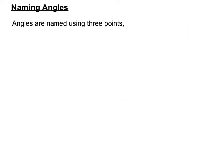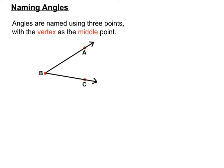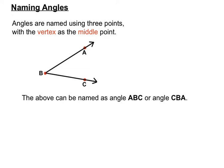When naming angles, we use three points and the vertex letter must be in the middle of the name. So with a point A, point B and point C, where B is at the vertex, the angle could be named angle ABC or angle CBA. It doesn't matter what order we put A and C in, but it's essential that the vertex letter B is in the middle of our name. That way we know which angle we're referring to when there's more than one angle in a diagram.